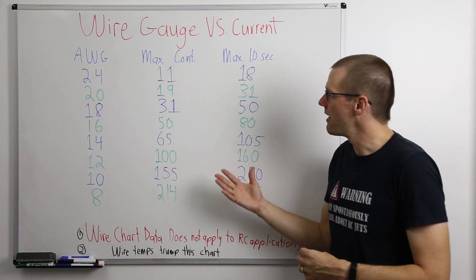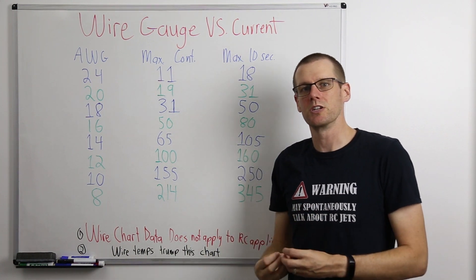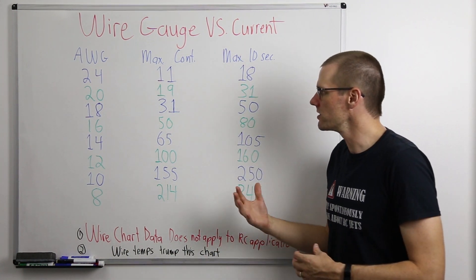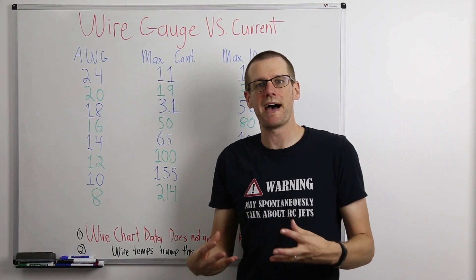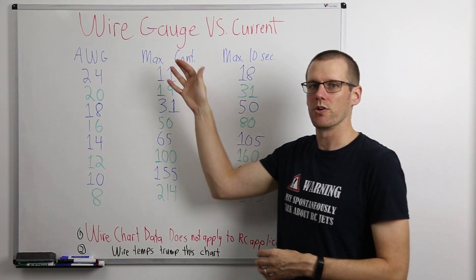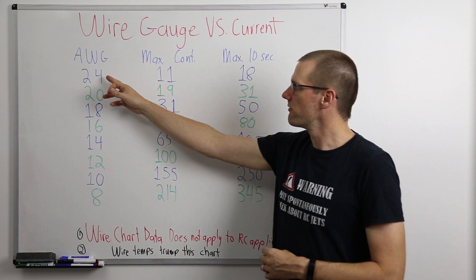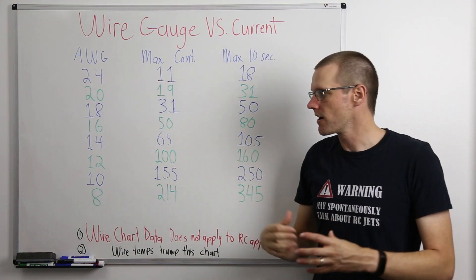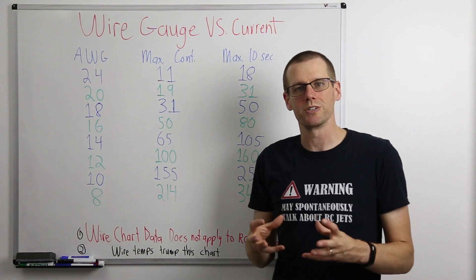So now let's take a look at what we have for maximum continuous currents. These are maximum continuous, that means you can continuously draw this amount of power for the entire duration of a battery pack. So that's very key to what we're defining as maximum continuous. For our 24 gauge, we have 11 amps all the way down to our eight gauge being 214 amps.